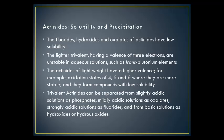Knowing about the solubility and precipitation of actinides helps chemists understand their properties better. The fluorides, hydroxides, and oxalates of actinides have low solubilities. The lighter trivalent actinides — those with a valence of 3 electrons — are unstable in aqueous solutions, such as transplutonium elements. The actinides of lighter weight have higher valence oxidation states of 4, 5, and 6, where they are more stable and form compounds with low solubility. Trivalent actinides can be separated from slightly acidic solutions as phosphates, mildly acidic solutions as oxalates, strongly acidic solutions as fluorides, and from basic solutions as hydroxides or hydrous oxides.